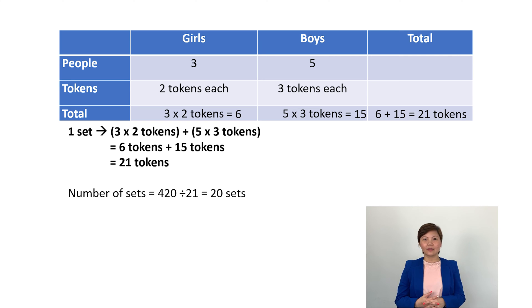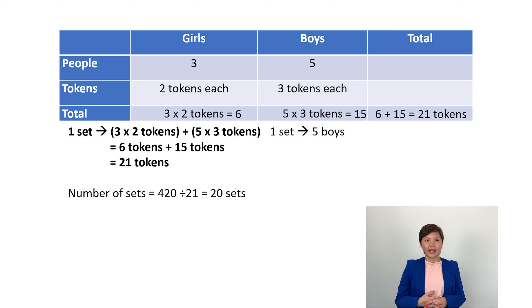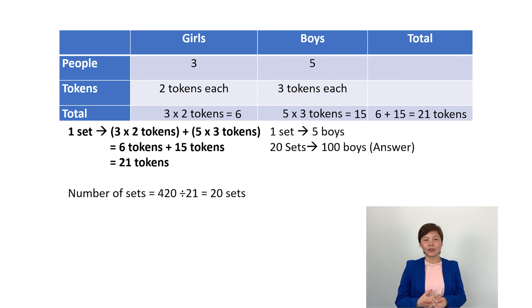Let's answer the first question: how many boys are there at the fun fair? In one set, there are 5 boys. So 20 sets would mean 20 times 5. There are 100 boys at the fun fair.